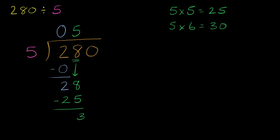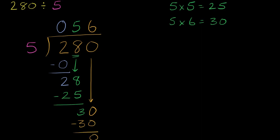And now let's bring down the next digit. In this case, the digit is a zero. So how many times does five go into 30? Well, it goes exactly six times. We've already talked about that. Six times five is 30. We subtract, and we have nothing left over. So we just figured out that 280 divided by five is equal to 56.